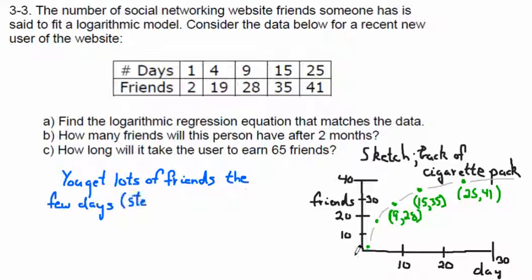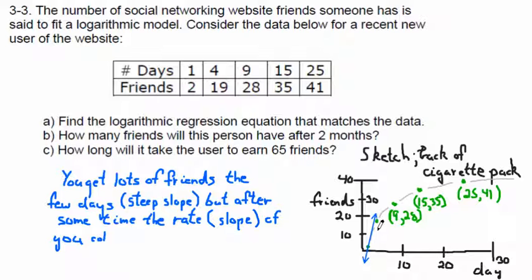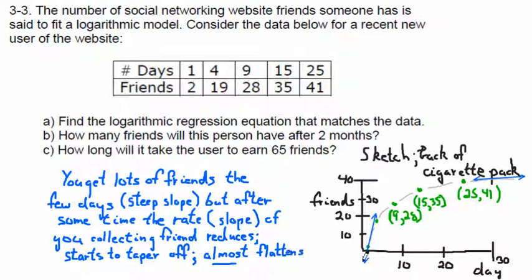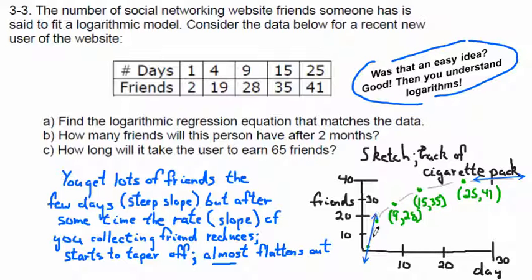You get lots of friends the first few days — look how the slope is really steep. A slope is a rate of change. Notice how the rate at which you collect friends is really steep at first, and then later on it starts to level off. It never does level off completely — it might take another two years for you to get another six friends. It never does go asymptotic. Please appreciate you can do a lot of this stuff just by hand, just sketching it.